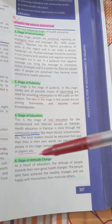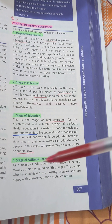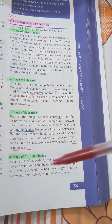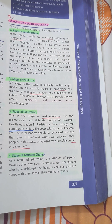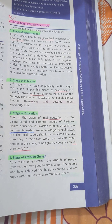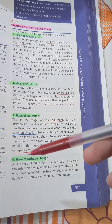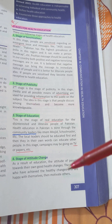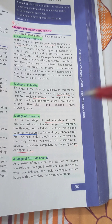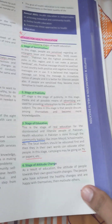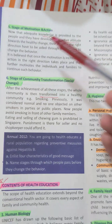Stage four is the stage of attitude change. As a result of education, the attitude of people towards their own health changes. People who have achieved healthy changes and are happy with themselves can motivate others. After getting enough education and attitude change, those who have actually worked on themselves can motivate others as well.